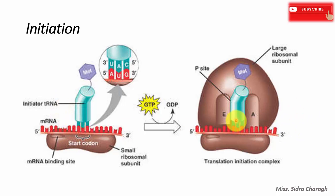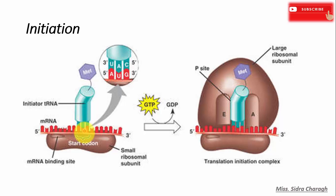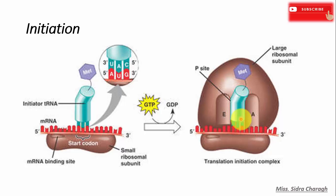The first transfer RNA always enters the P site of the ribosome during translation. The 5' end of the messenger RNA binds to the small subunit of the ribosome at the initial start codon AUG. The transfer RNA with anticodon UAC also binds to the messenger RNA AUG codon by complementary base pairing, with methionine attached to the transfer RNA 3' terminal. Then the large ribosomal subunit binds, completing the ribosome structure.